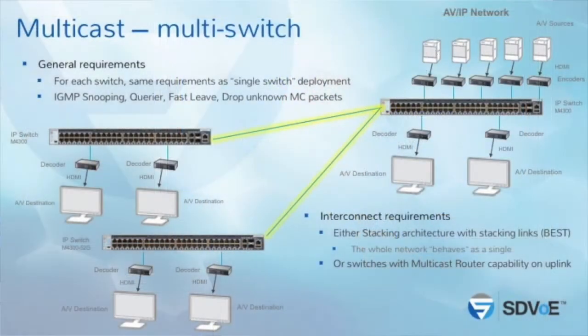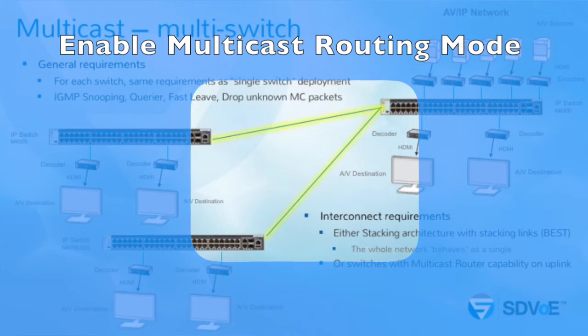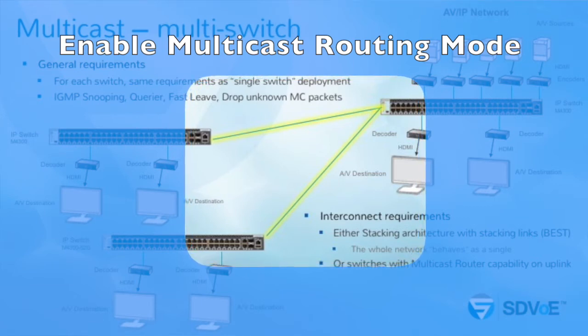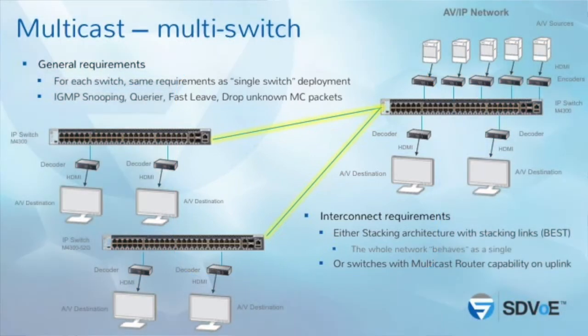Now, if you have a customer with many buildings, you may need several switches. Multicast, like VLANs, is not basically meant to go from one switch to another. You will have links between switches, and you'll need to enable a multicast routing mode on those links to allow IGMP snooping to flow from one switch to the other. IGMP snooping, querier, and fast leave are not sufficient there — you need to enable a multicast wiring mode on the inter-switch links.